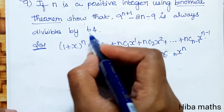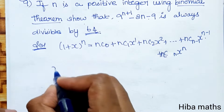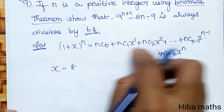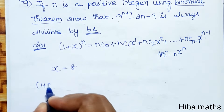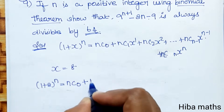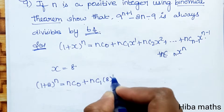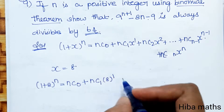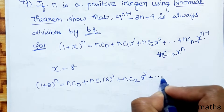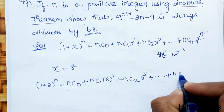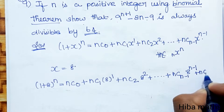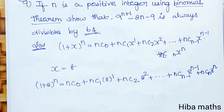Now we can apply it to the question. We use 1 plus 8, whole power n: it equals nC0 plus nC1 times 8 plus nC2 times 8 power 2, plus up to nC(n-1) times 8 power n minus 1 plus nCn times 8 power n.